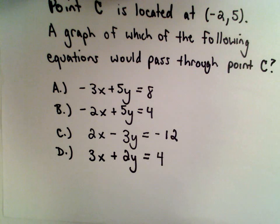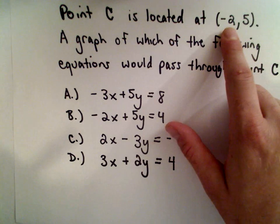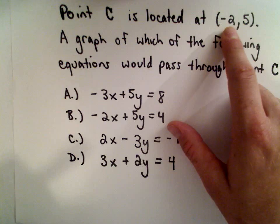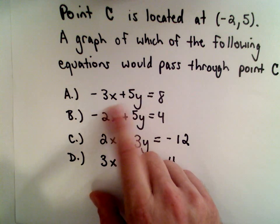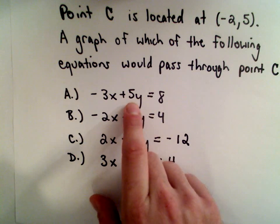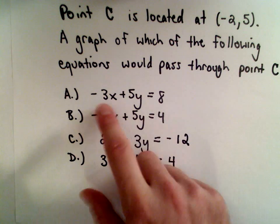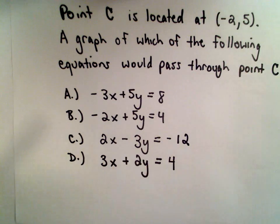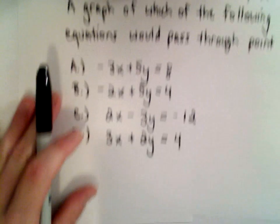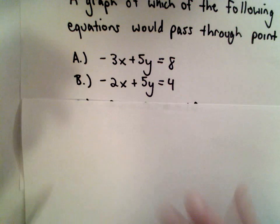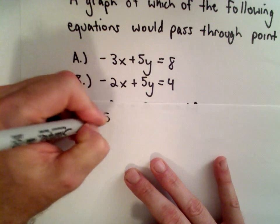The idea to do this is basically just a brute force check. If you substitute in the x value of -2 and the y value of positive 5, when you do the arithmetic on the left side, you want it to equal the value on the right. If so, that equation would go through that point, and if not, it doesn't. We've got the point (-2, 5).